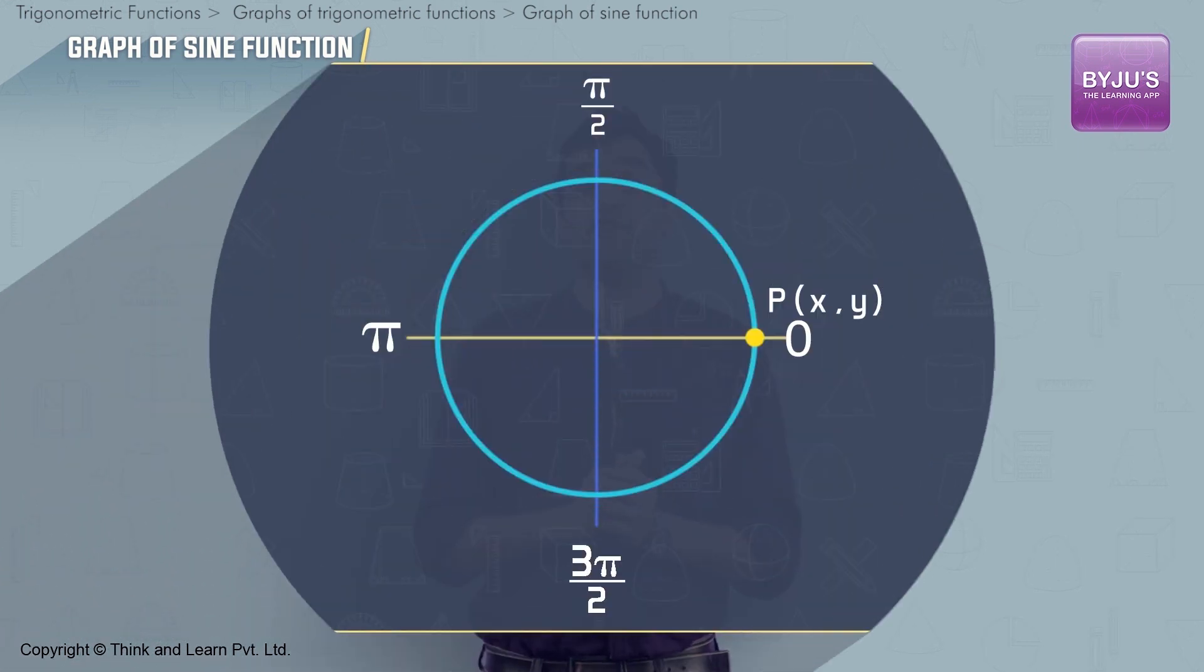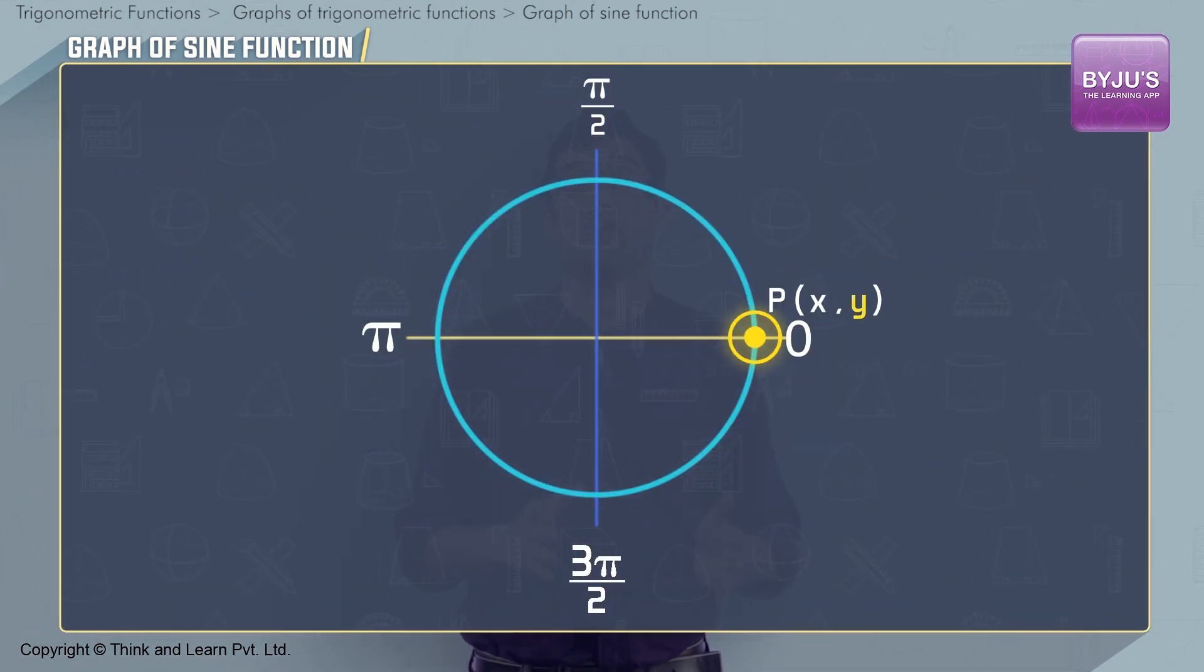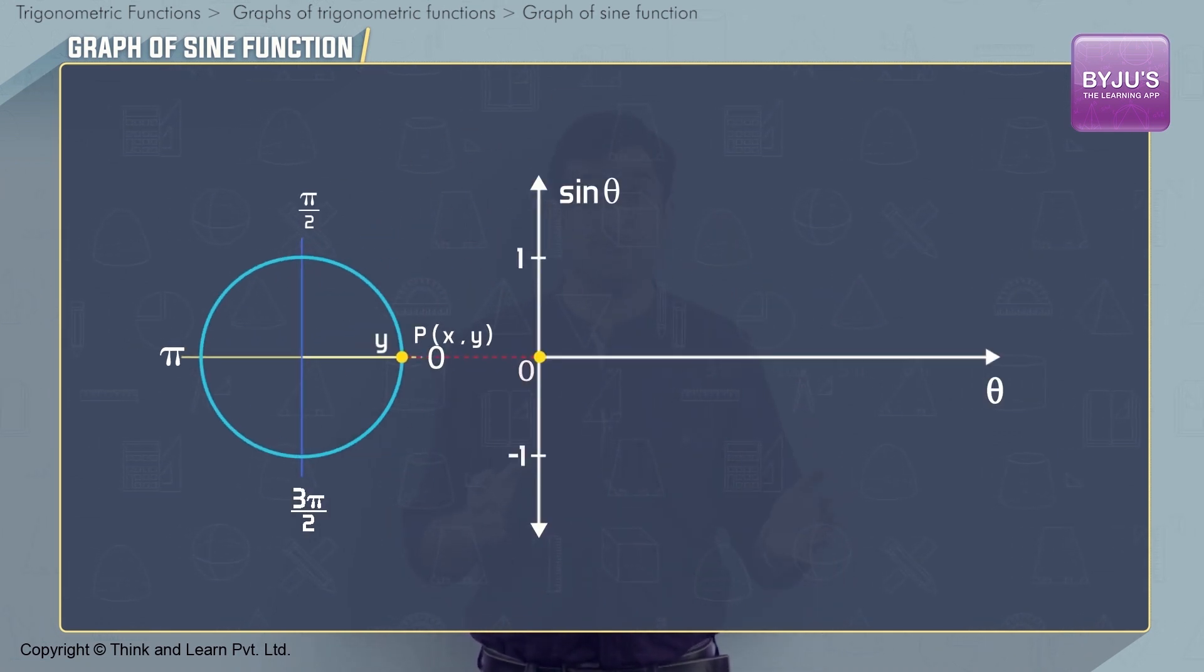In this figure, we know that sin theta is nothing but the y coordinate of the point P. So, let's plot the value of theta on the x-axis and the value of sin theta on the y-axis. When theta is 0, the y coordinate of P is 0, and so sin theta is 0.